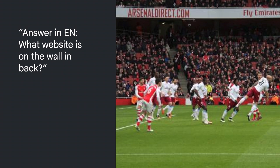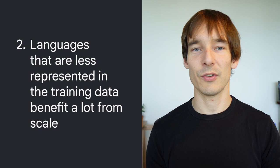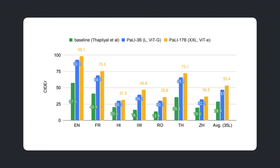A third example shows the model's ability to read. There are multiple pieces of text on stadium banners, and based on the question, the model infers the pattern of text it should look for to return the correct answer. A second interesting result is that languages less represented in the training data see relatively large benefits from scale. For example, for language code IW — the original ISO code for Hebrew — performance improves almost four times when we scale the model, using a relatively small fraction of the training data. We saw large gains for all languages that are less frequent on the web.